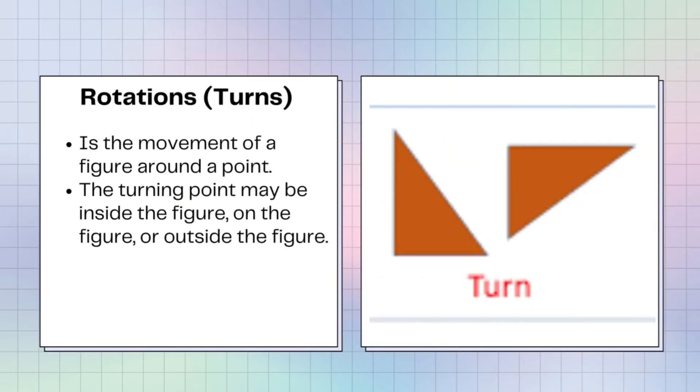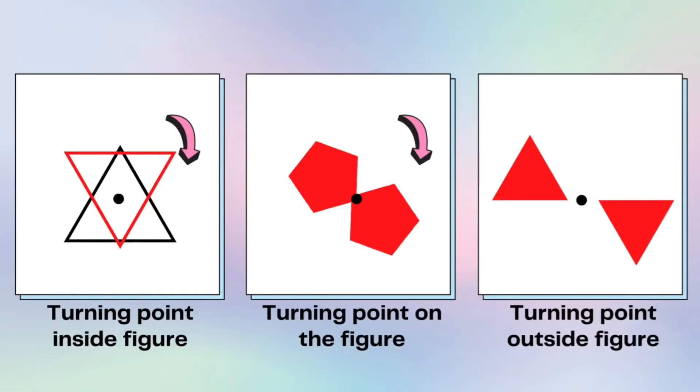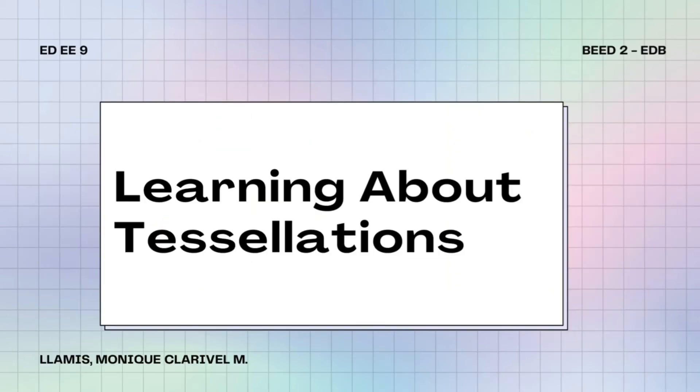The last fundamental types of rigid transformation is the rotations also called as turns. It is the movement of a figure around a point. The turning point may be inside the figure, on the figure, or outside the figure. Here are the examples of rotations. The first is turning point inside figure, the second is turning point on the figure, the last one is turning point outside figure.